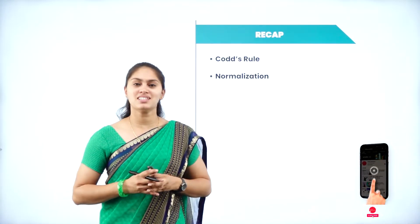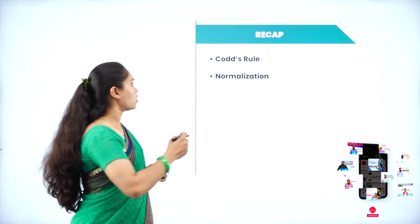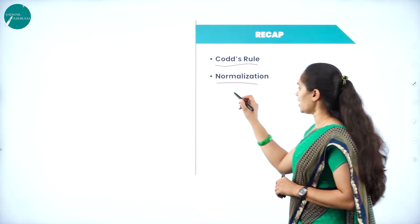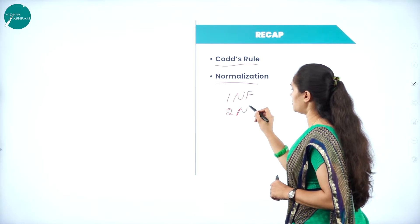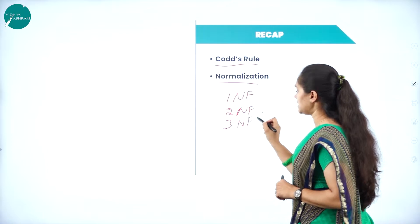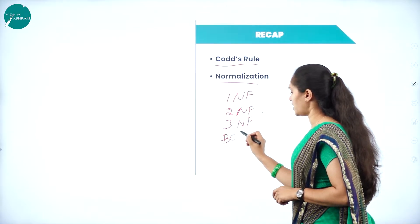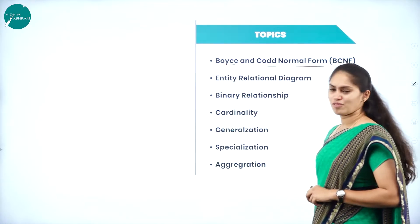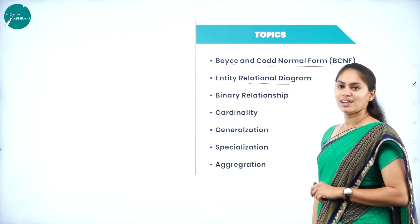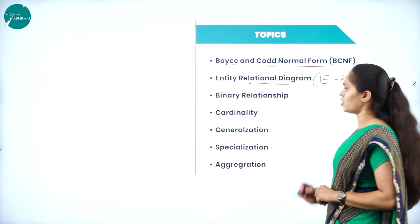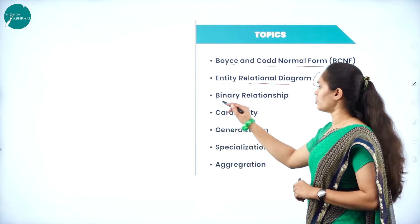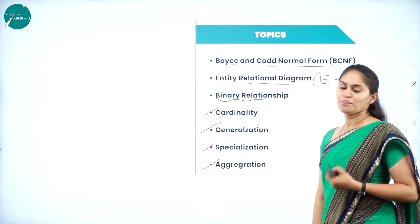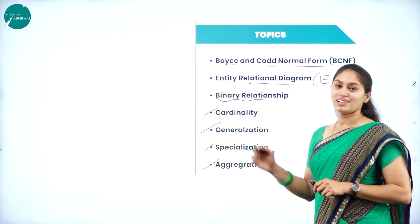In the previous session of this chapter, we discussed the 13 rules of Codd's rules and also normalization — what normalization means and the types: first normal form, second normal form, and third normal form (3NF). In today's session, we will be discussing BCNF (Boyce-Codd Normal Form), the entity relational diagram (ER diagram), types of relationships including binary relationship, cardinality, generalization, specialization, and aggregation.